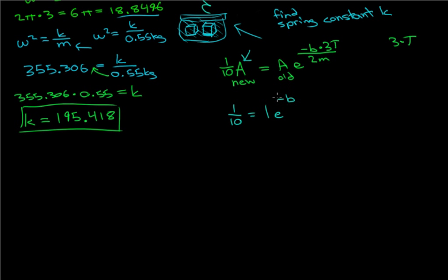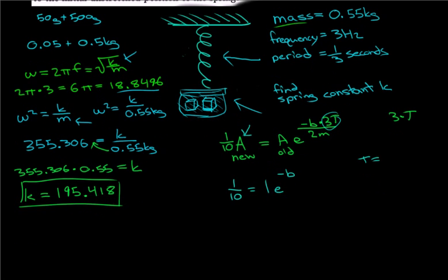to the negative B, and we're trying to solve for the damping constant B. Now, look what happens with the 3T. Because T equals the period, and the period was 1/3 seconds, it becomes 3/3 seconds, so it's just B times one.